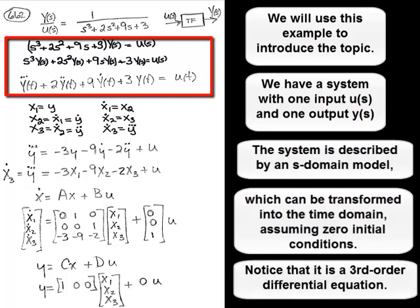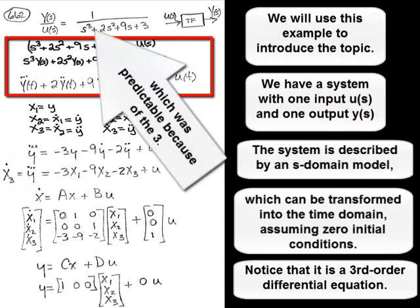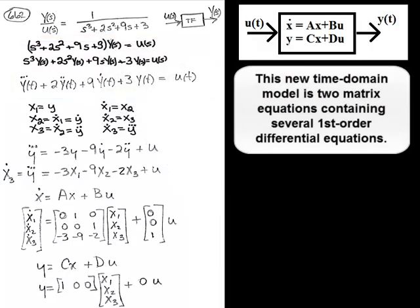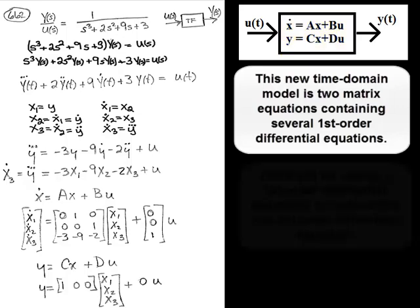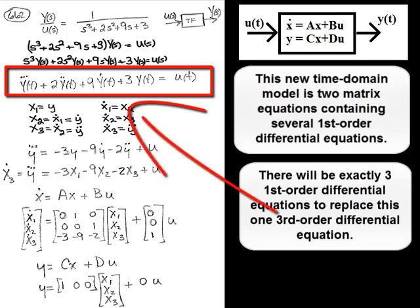Notice that it's a third-order differential equation, which was predictable because of the three. This new time domain model is two matrix equations containing several first-order differential equations. There will be exactly three first-order differential equations to replace this one third-order differential equation.